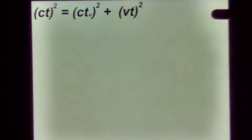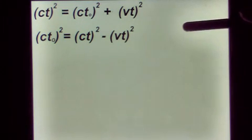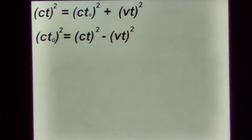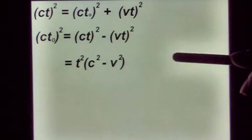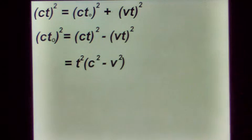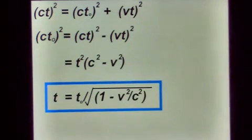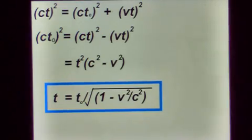The rest is fairly simple algebra. And we arrive at this formula which relates the passage of time within the inertial frame to the passage of time from an observer.